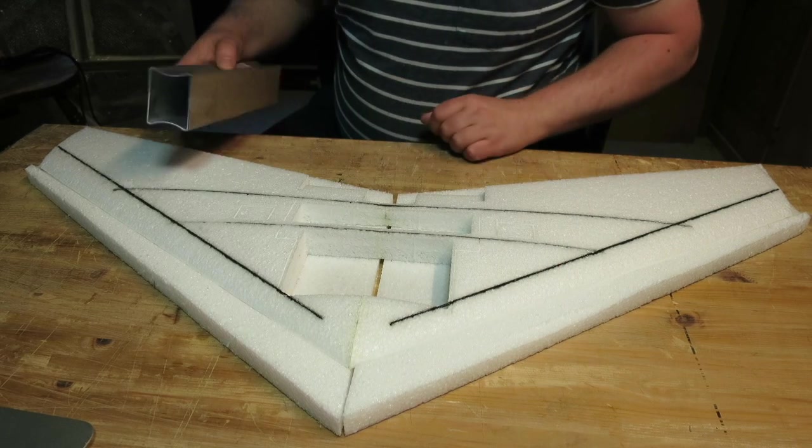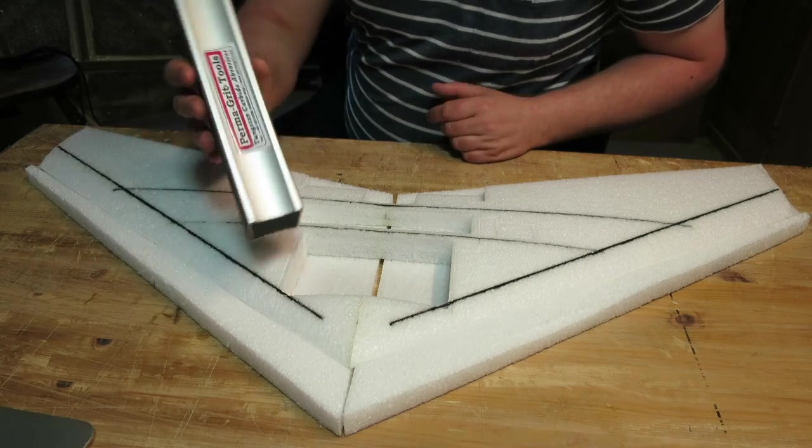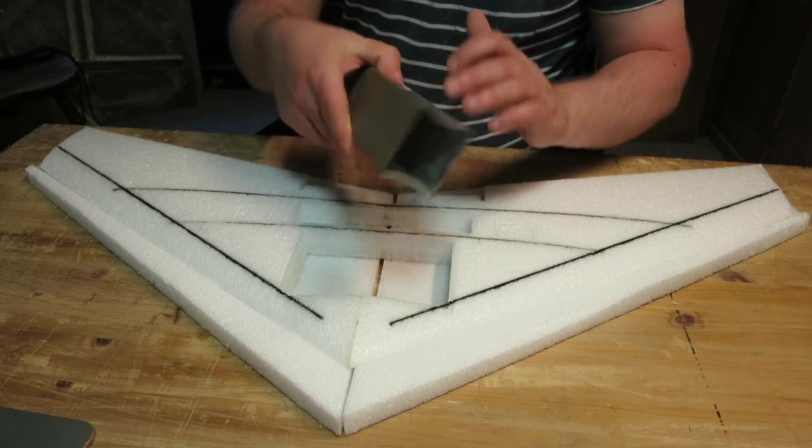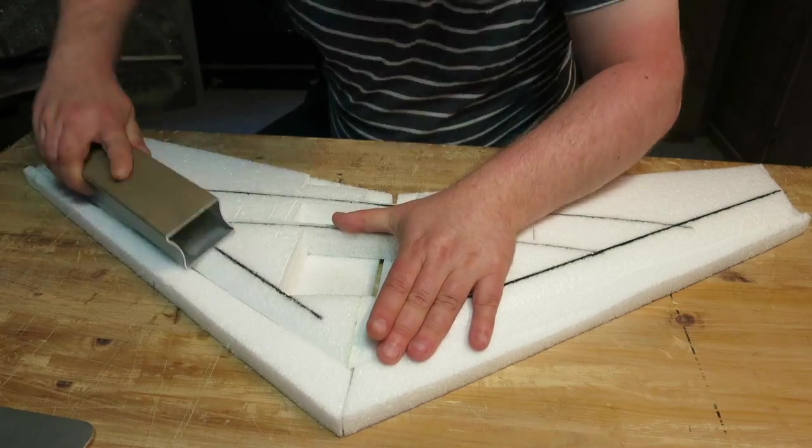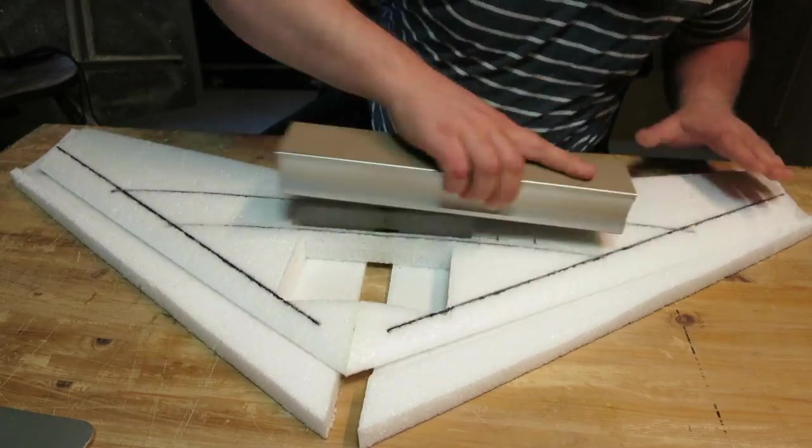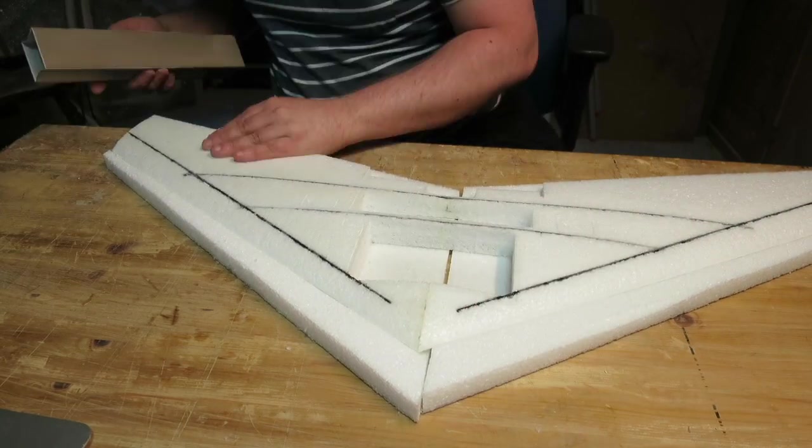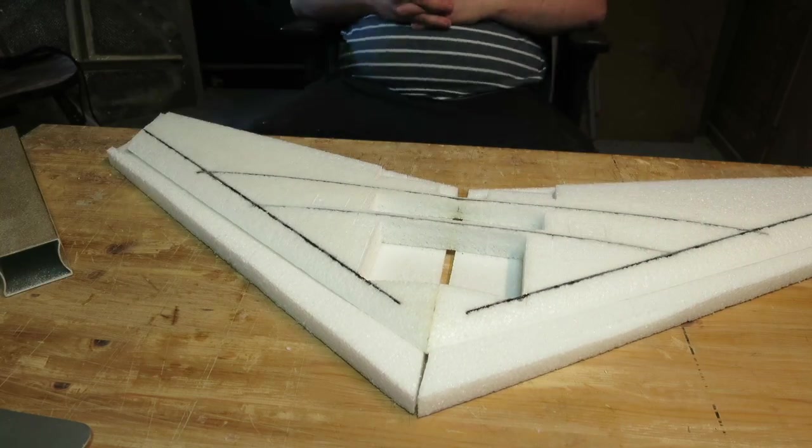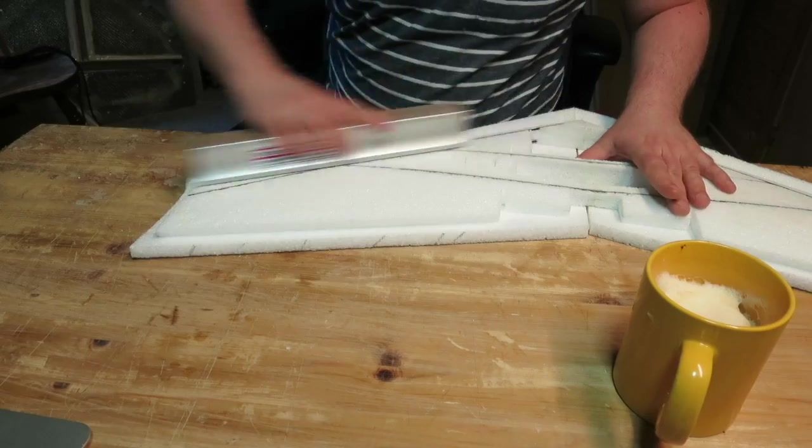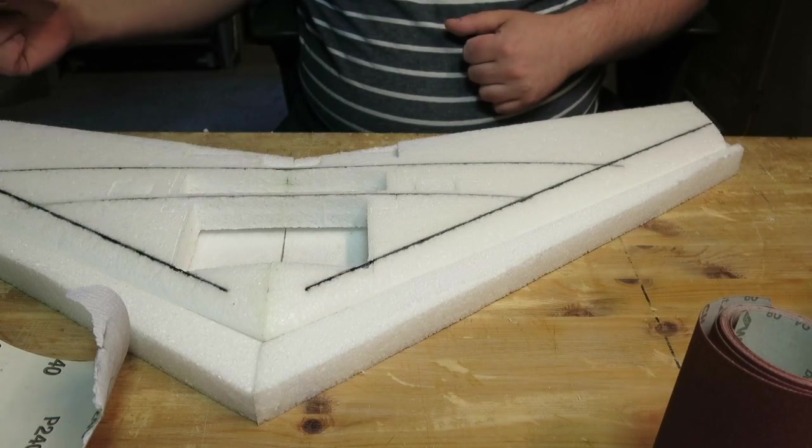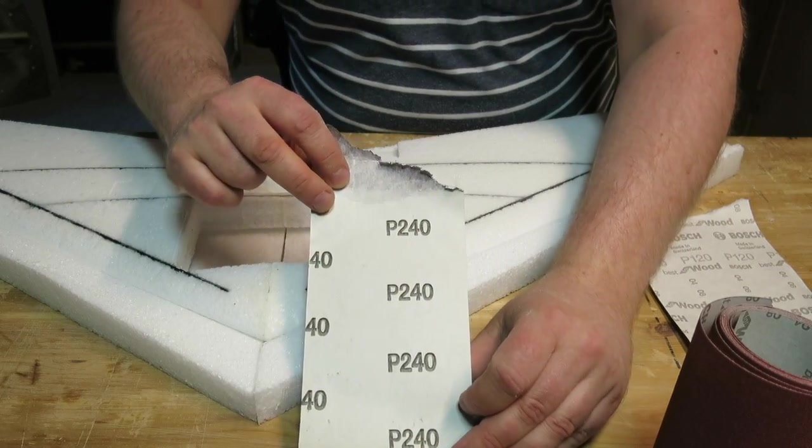The CA has hardened so now I will start sanding with this perma-grit. It is basically the same as normal sanding paper, it is just permanent. So I've got two sides of this, one 60 and 120 grit. So I did most of the work with 120 grit sandpaper, and I finished with 250 grit sandpaper.